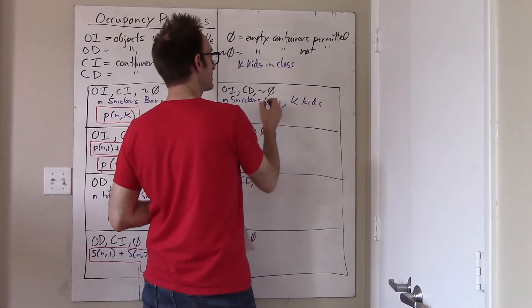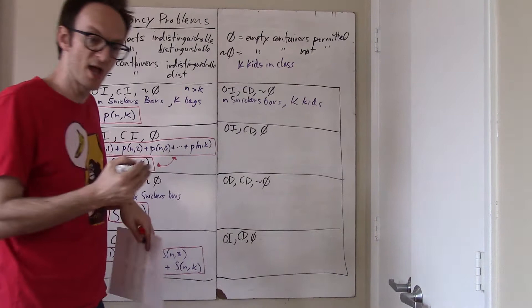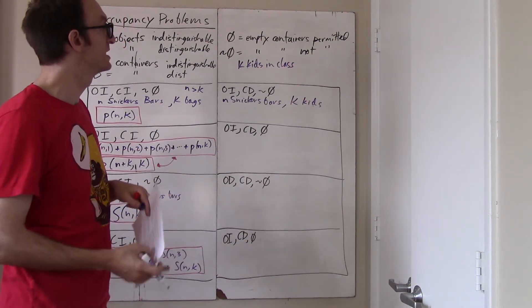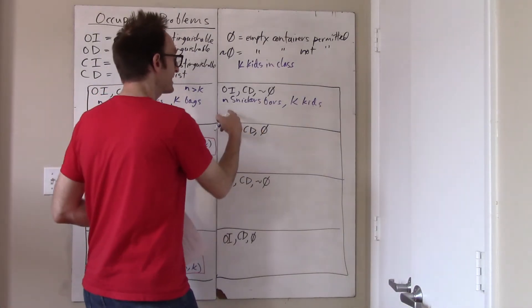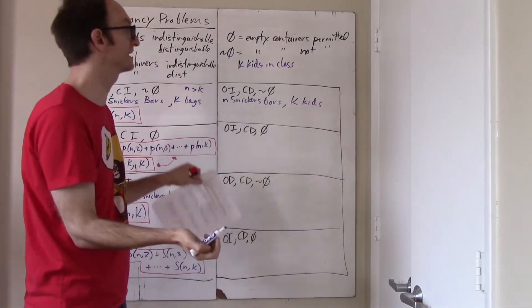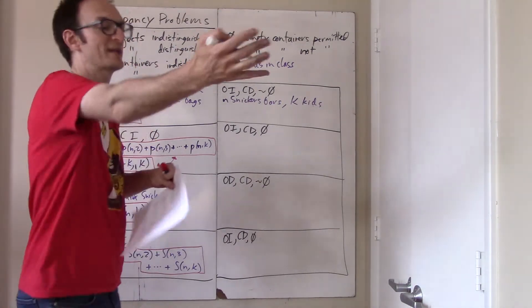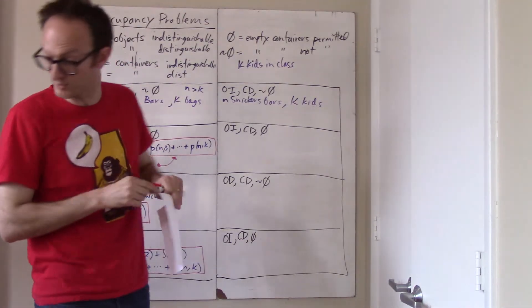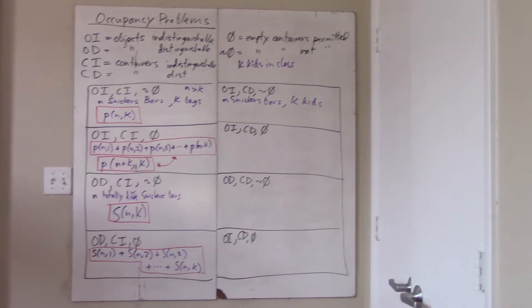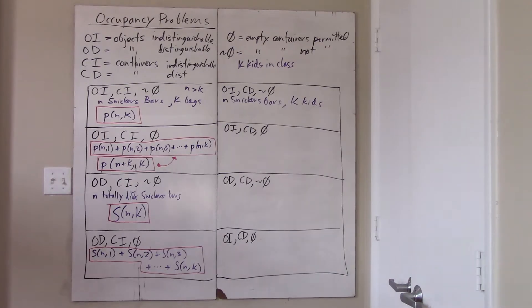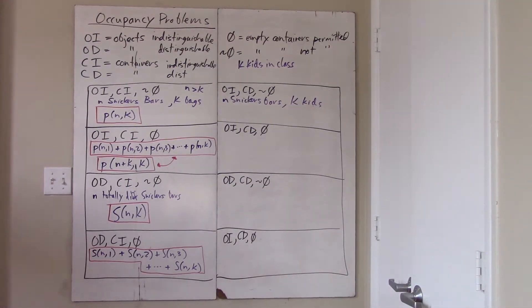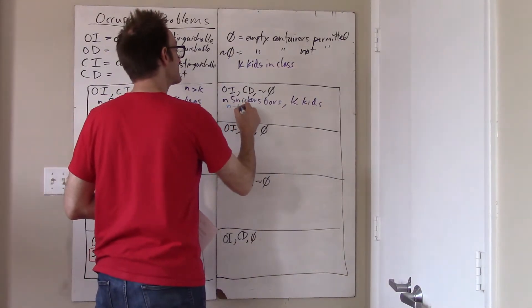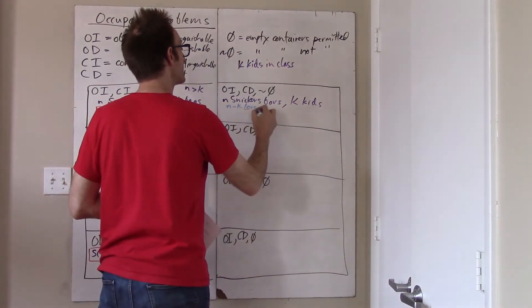This should be a familiar problem. We're just trying to figure out, if we have all the kids, how many ways are there to distribute these bars. Think of it like this: if every kid has to get at least one bar, then let's first just give every kid a Snickers bar. If we give every kid a Snickers bar, then there are N minus K bars remaining.